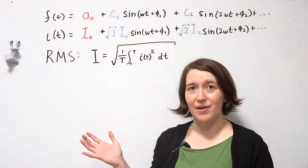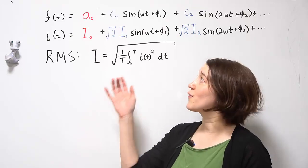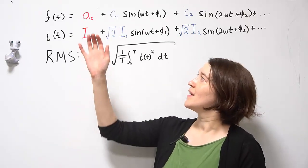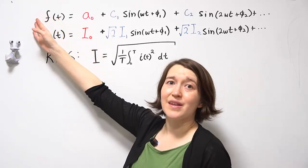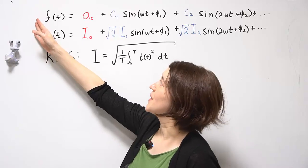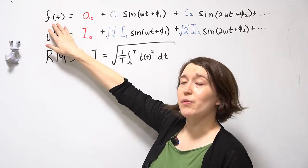Here we'll talk about the RMS calculation based on the Fourier series expansion components. We have the general form for the Fourier series expansion and f(t) is our periodic waveform.